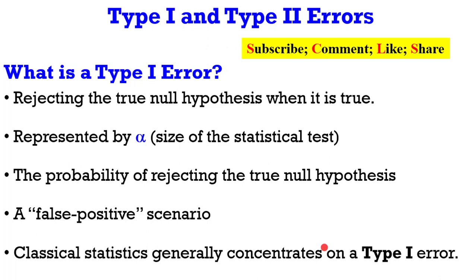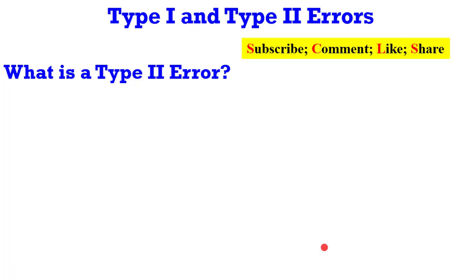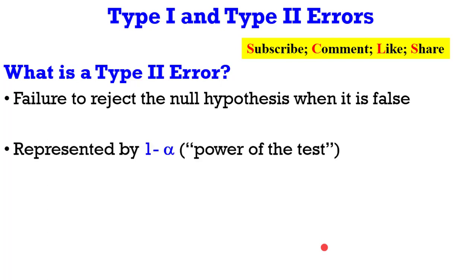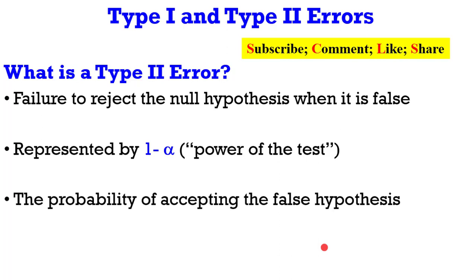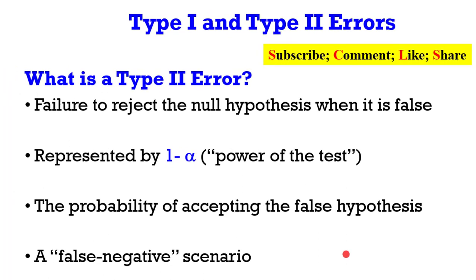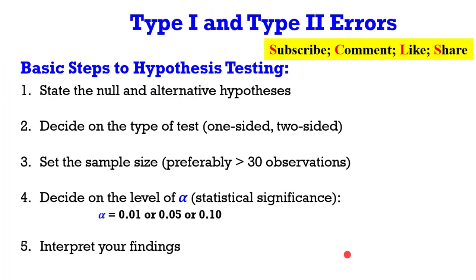Classical statistics generally concentrates on the type 1 error. How about the type 2 error? It is the failure to reject the null hypothesis when it is false. It is represented by 1 minus alpha, called the power of the test. It is the probability of accepting the false null hypothesis. It is a false negative scenario.